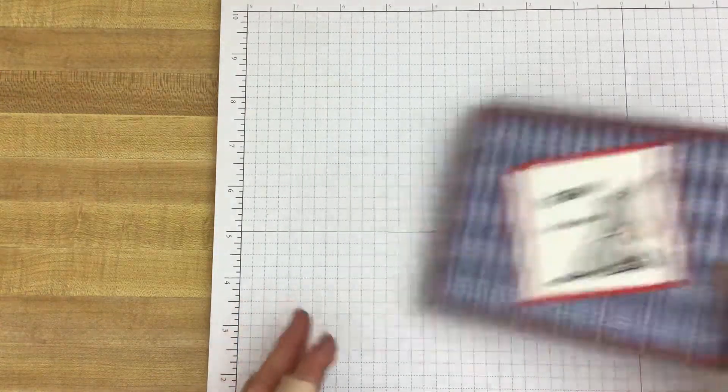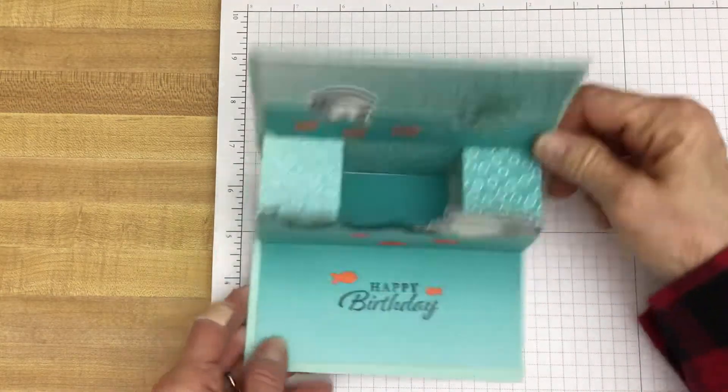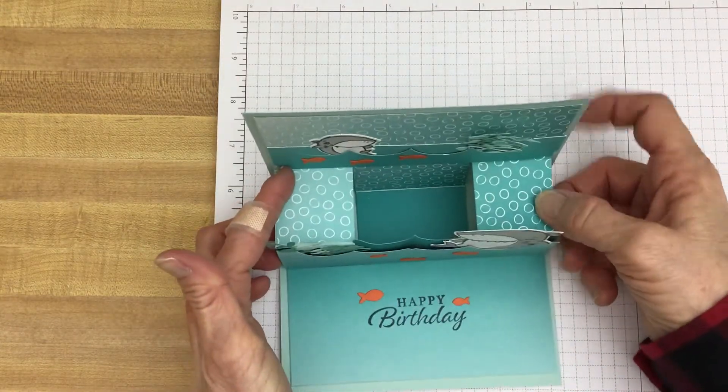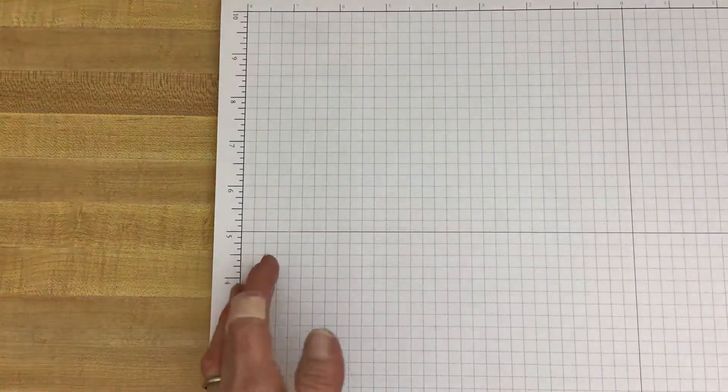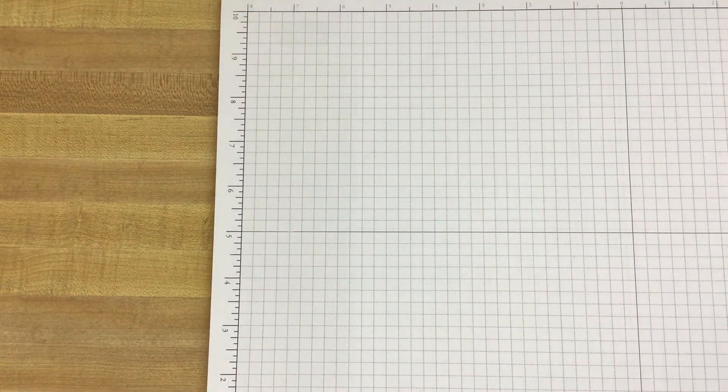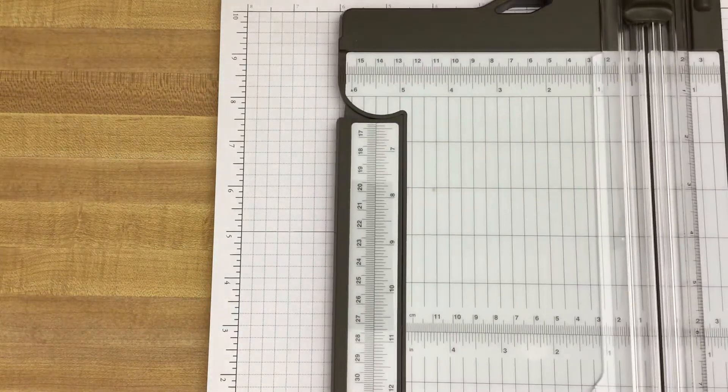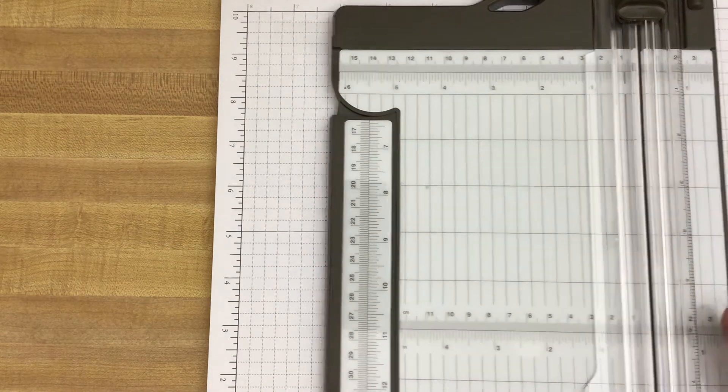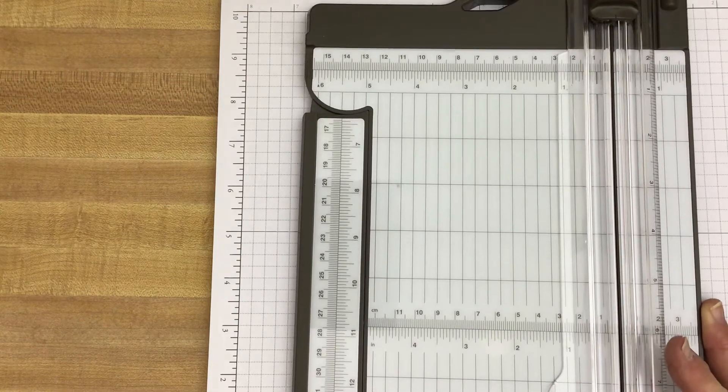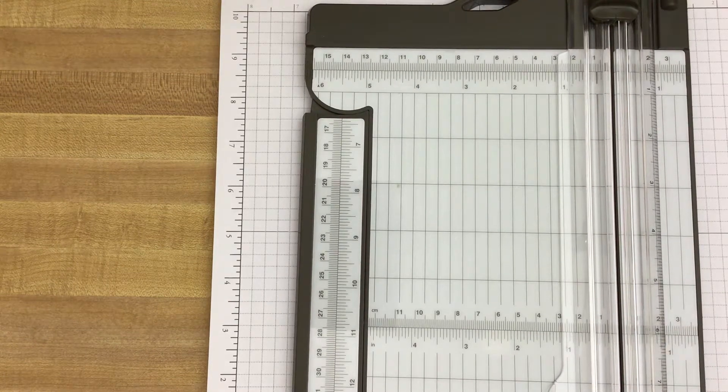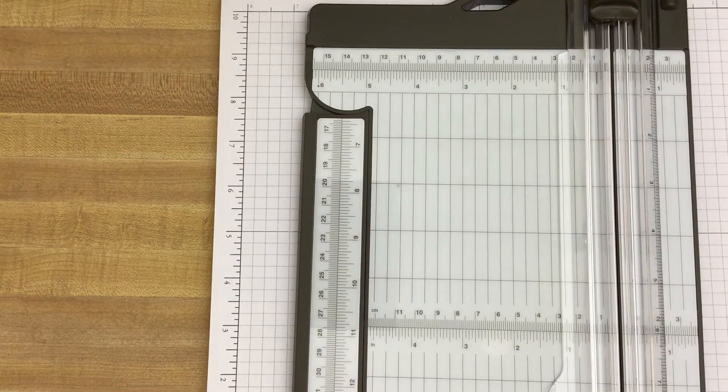So let's get busy on the cards and showing you how to make the mechanism. We'll start with this one first. It has the two little boxes. The nice thing about this little pop-up mechanism is for both cards the cutting is exactly the same. The scoring is just a little bit different. So we'll walk through that.